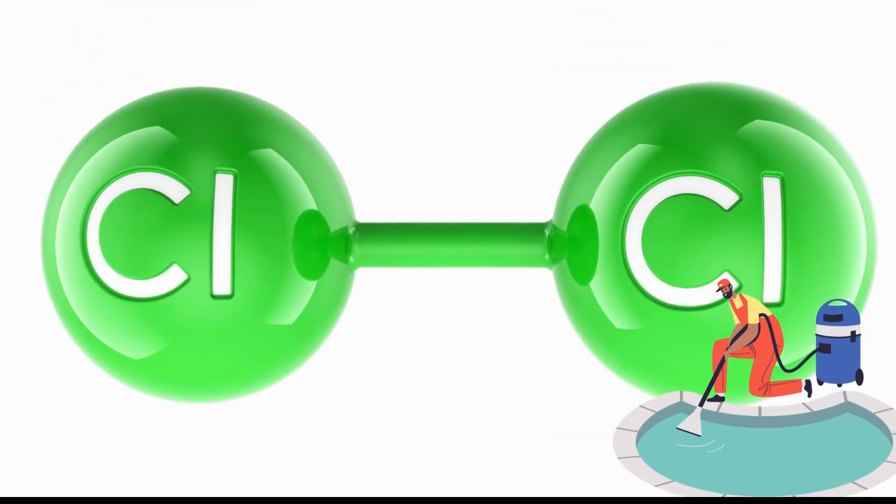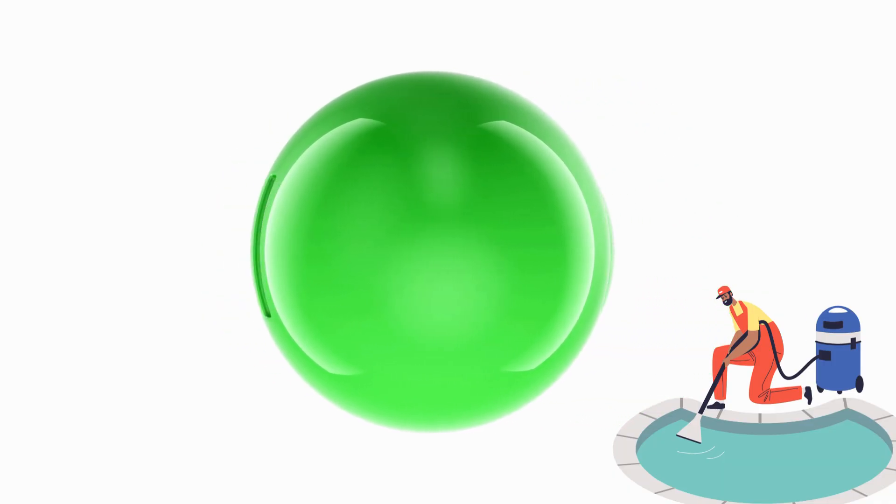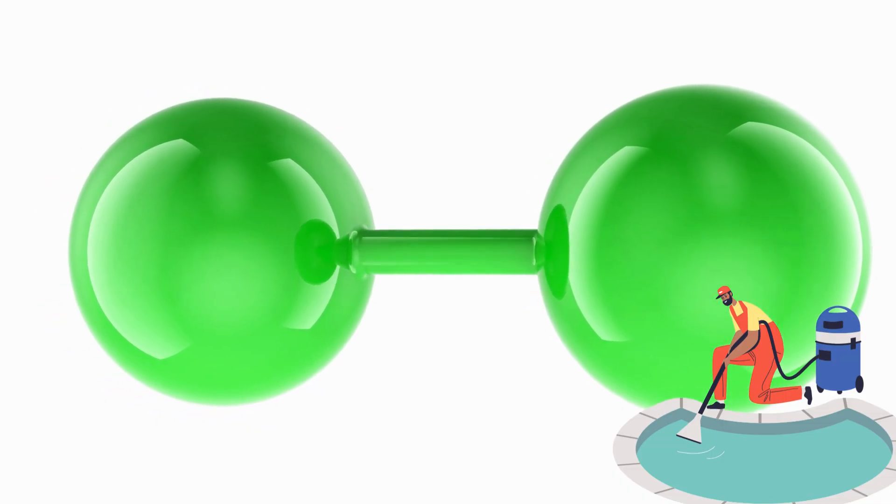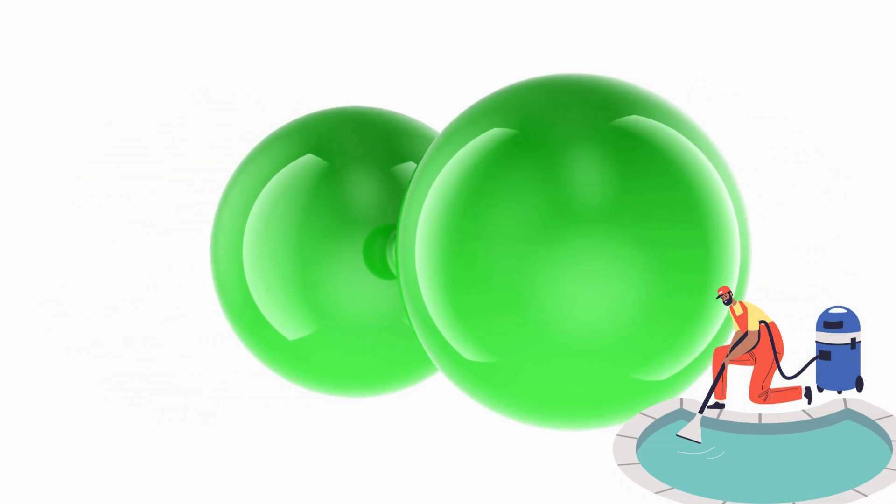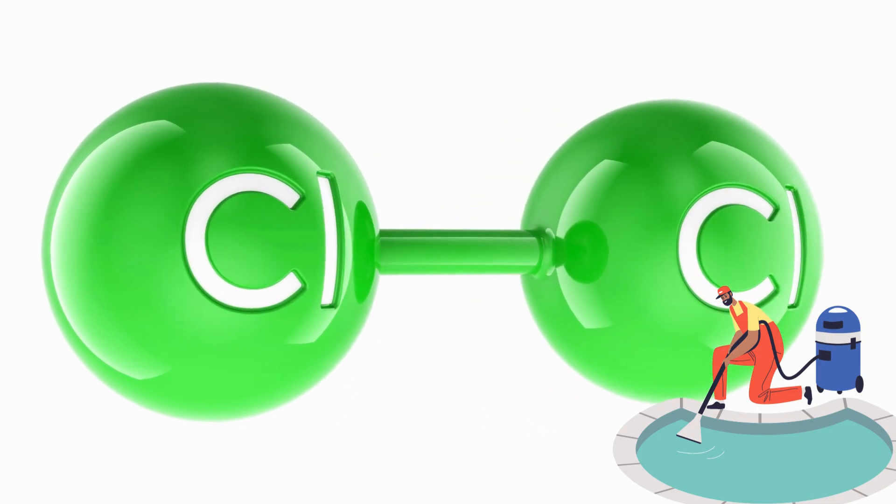Seventeen. Chlorine. Chlorine is a greenish gas. It's added to swimming pools to kill germs and keep the water clean. But pure chlorine is very dangerous, so it's always handled carefully.